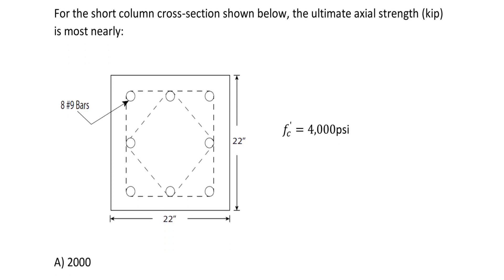We're given a cross-section, and we're told that F'C, the compressive strength of concrete, is 4,000 psi. What we want to determine is the ultimate axial strength in kips.